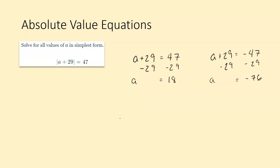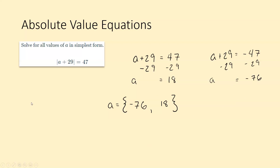To write your answer — this is how it wants you to write it in Delta Math — it will have an A equals, and then once you start typing in, you'll notice brackets pop up. You want to type in one of your answers, comma, followed by your other answer. I like to keep them from least to greatest, but the order shouldn't matter because they are both answers. So this is how you would write your answer in Delta Math, where you just fill in the blanks.